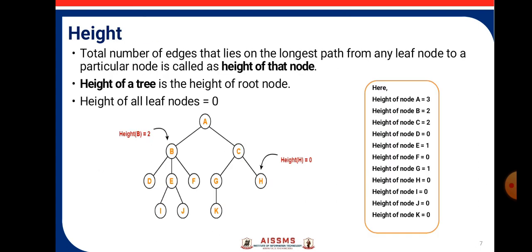Height: Total number of edges that lies on the longest path from any leaf node to a particular node is called as the height of that node. Height of a tree is the height of the root node. Height of all the leaf nodes is zero. When we talk about height of the root node, that is A, we will see that the height of A is 3. Here, you can see the height of each node is written. So, height of D, I, J, F, K, L are zero because they are the leaf nodes.